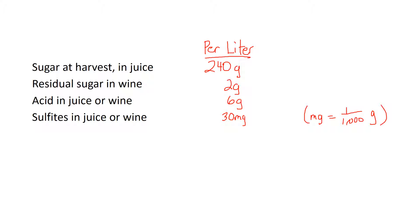Acid's a lot lower than our beginning sugar. A little acid goes a long ways, six grams compared to 240 grams at harvest. 30 milligrams of sulfites obviously goes a long ways as well because it's a very low number and that's all we need to protect our wine.